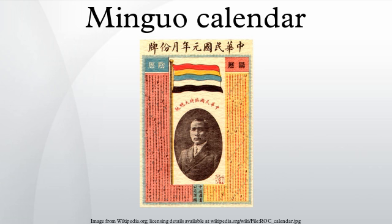Generally, the ROC era is obtained by subtracting 1911 from the Gregorian calendar year. Regarding computer support, since the release of Java 8, the Minguo calendar is supported in the new date and time API.